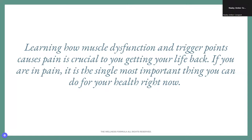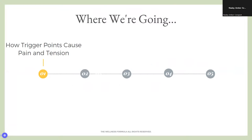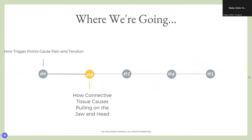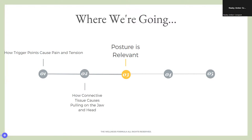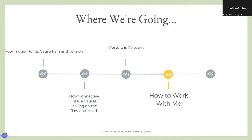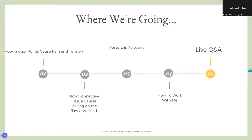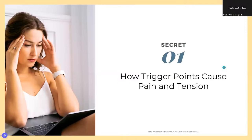Learning how muscle dysfunction and trigger points cause pain is really crucial to getting your life back if you're in pain. It is the single most important thing you can do for your health right now. We're going to be covering: how trigger points cause pain and tension, how connective tissue causes pulling on the jaw and head, and how posture is relevant to all of this. Then I'll give you the chance to work with me, and we'll have time for questions and answers.